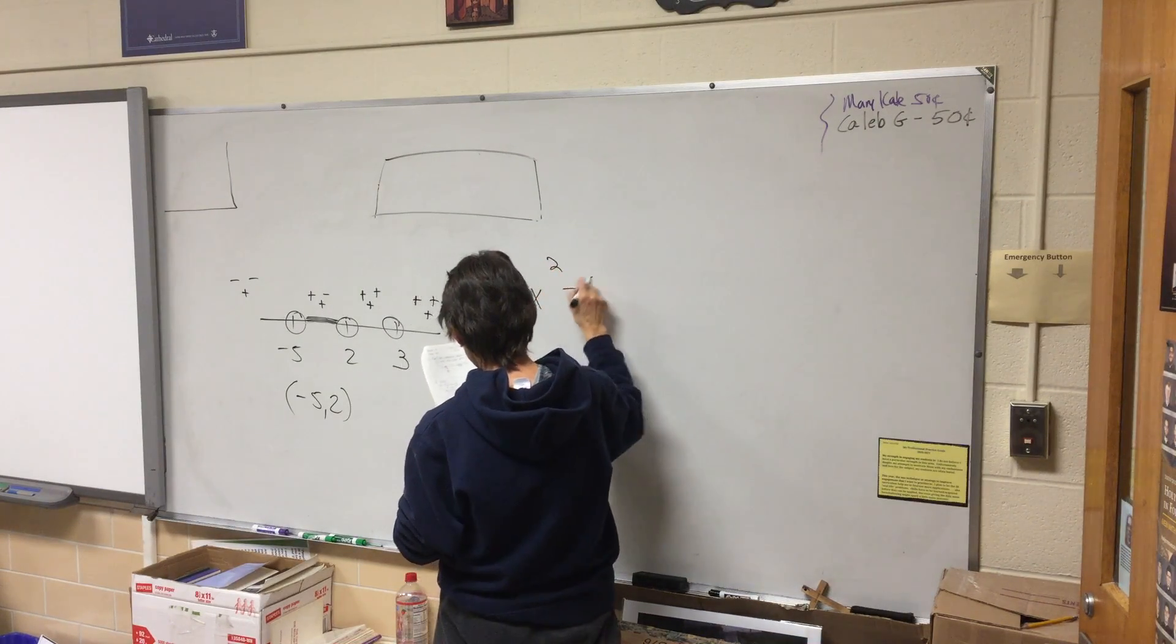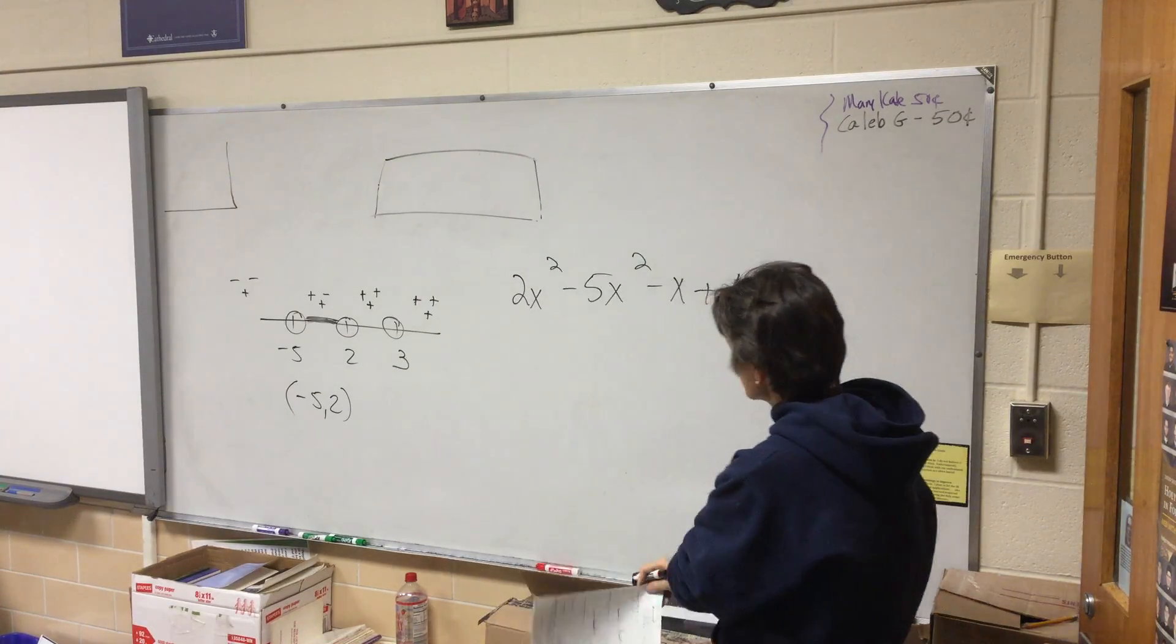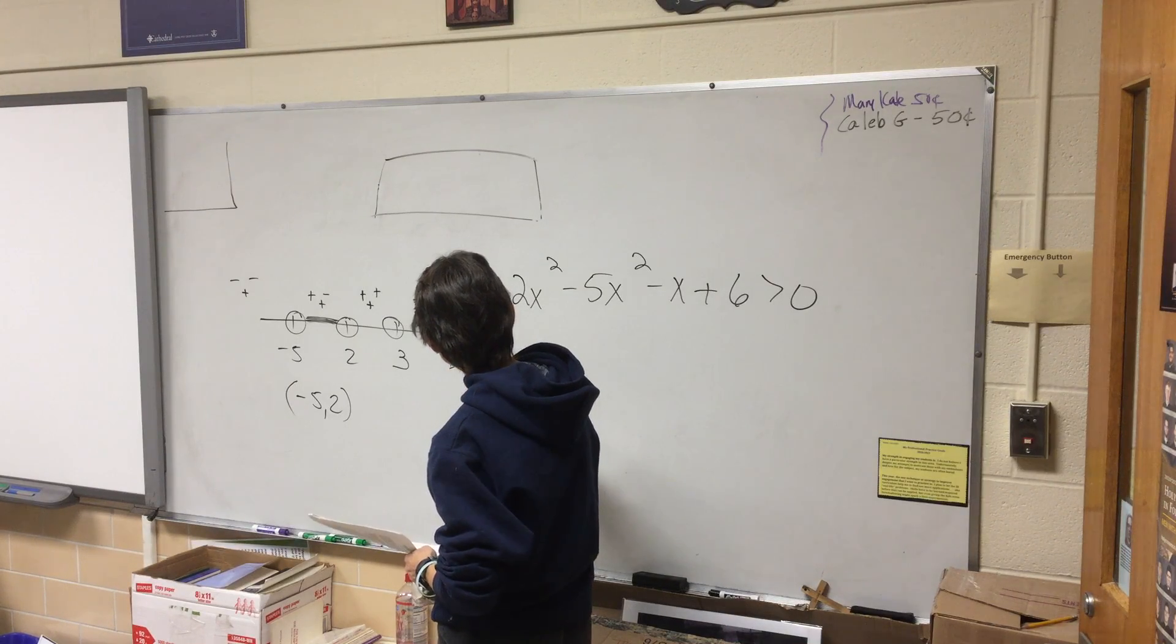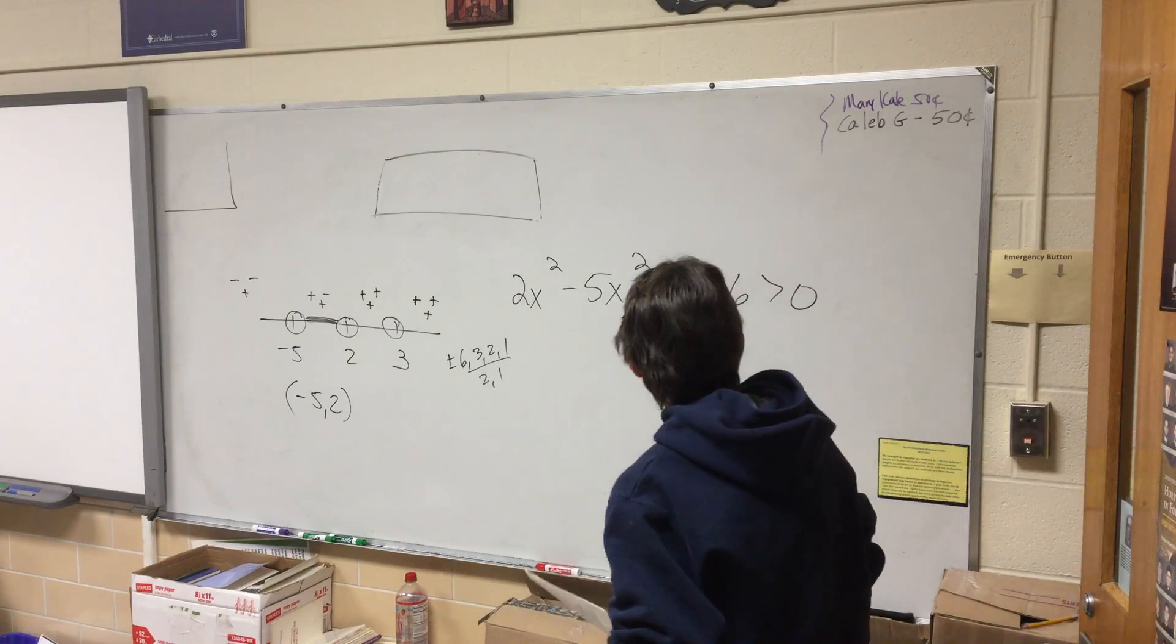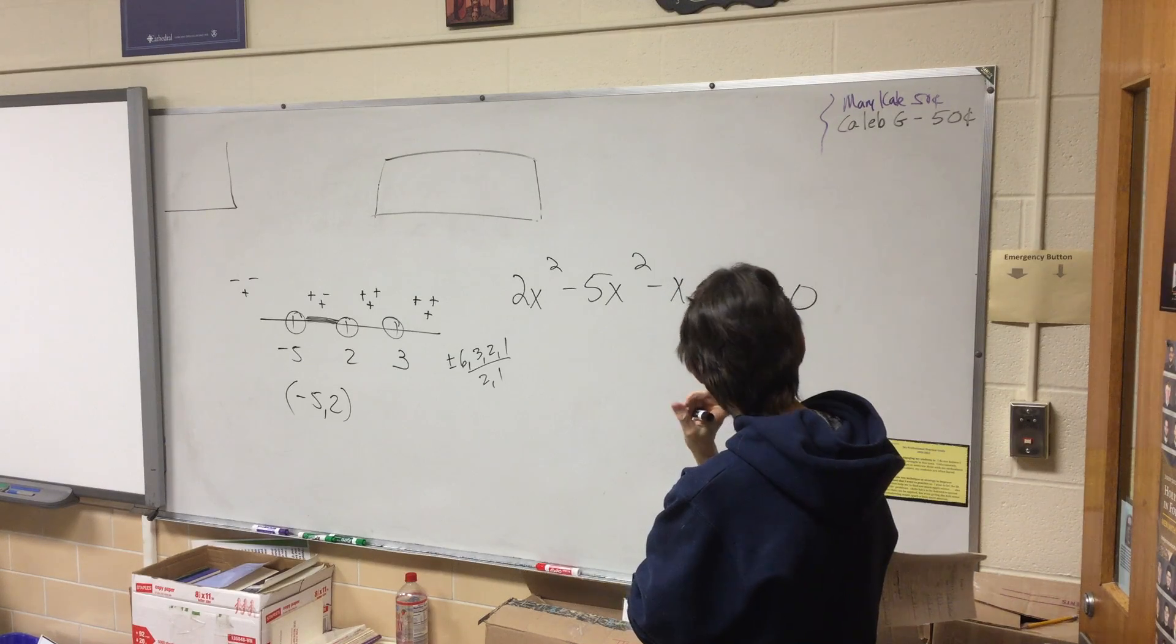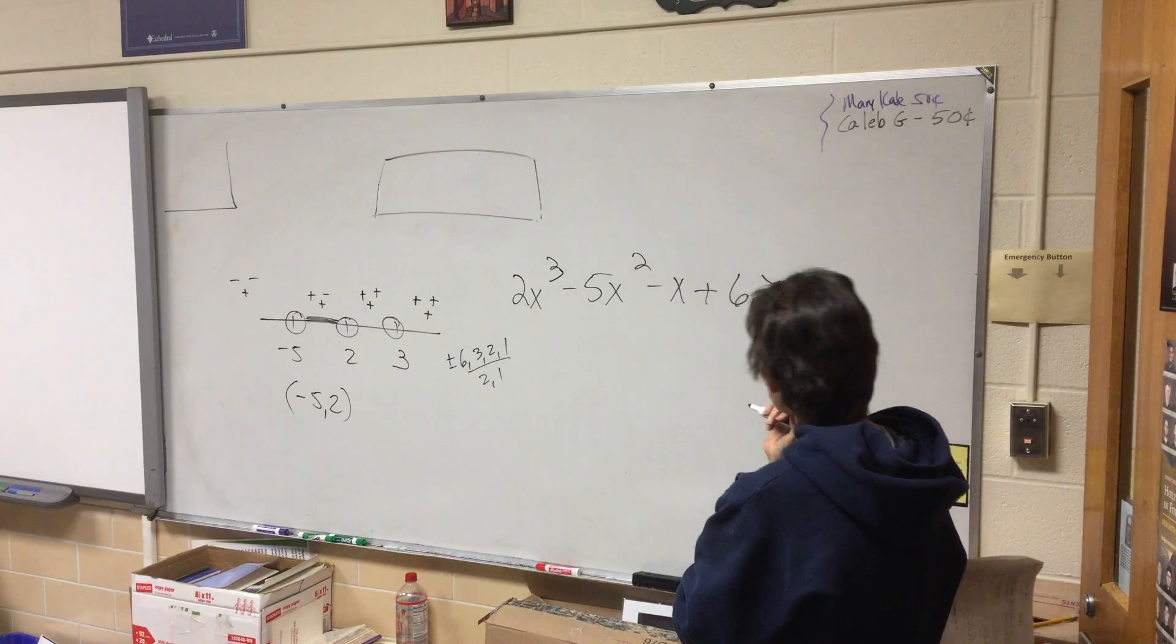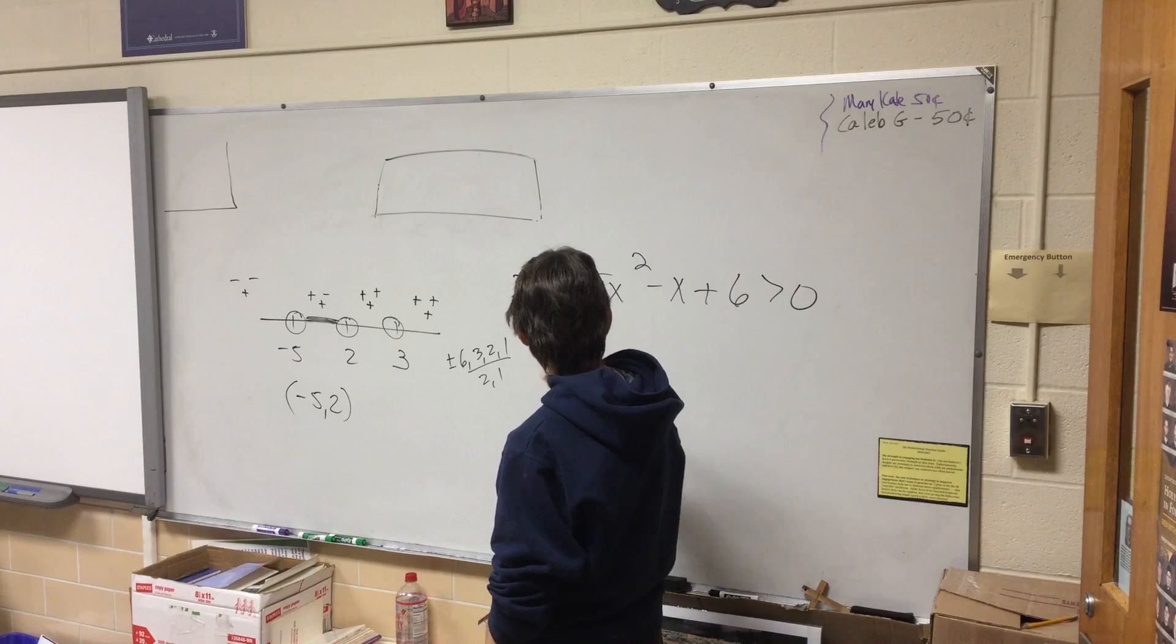What are you doing with the next one? We find the PRRs, because it doesn't factor by grouping. PRRs are going to be factors of six over factors of two. That's a cube. I'm just going to start guessing.